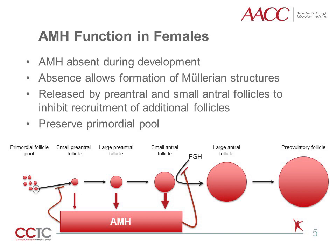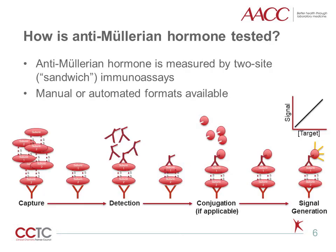AMH has also been proposed to titrate the estrogen released by granulosa cells through desensitizing granulosa cells to FSH. In the clinical laboratory, anti-mullerian hormone is measured by immunoassays. Originally, this was performed via manual, two-site, or sandwich format ELISA. However, as clinical utility has been demonstrated and interest has increased, automated two-site immunoassays are also common.